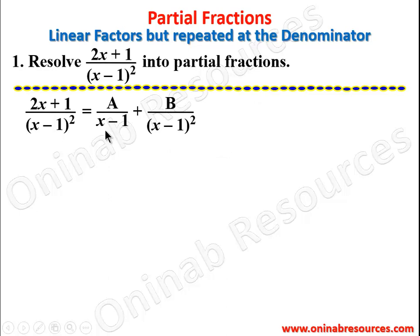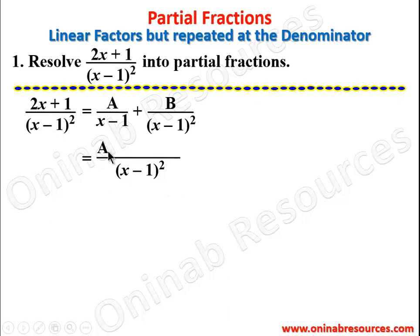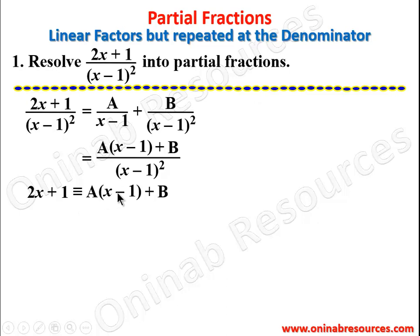We find the values of A and B by finding the LCM of (x - 1) and (x - 1)². The LCM is (x - 1)². Now (x - 1)² divided by (x - 1) removes one factor, multiplied by A gives A(x - 1). Then (x - 1)² divided by (x - 1)² leaves one, multiplied by B gives plus B. Since the denominators are equal, the numerators are equivalent, so 2x + 1 ≡ A(x - 1) + B.